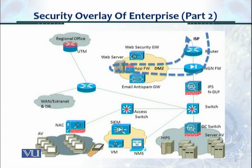In this first traffic flow, we see that there's traffic coming from the outside, passing through the router, going through the NGN firewall, and this traffic is directed to the web server lying in the DMZ. The web server is accessed — it could be a user trying to access the corporate web portal — and the traffic goes back out.